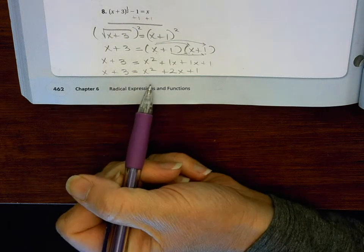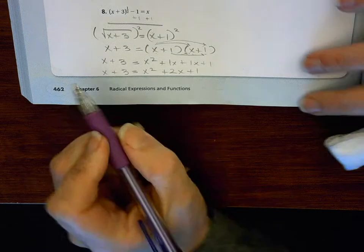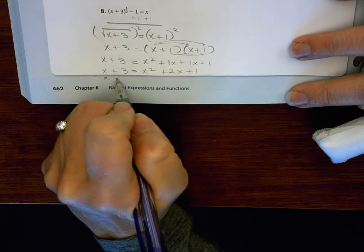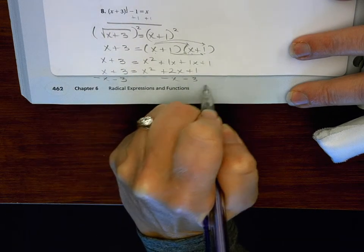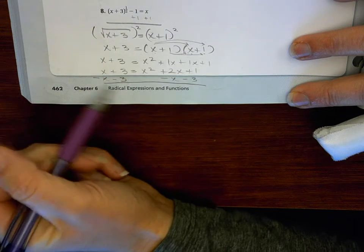And then I have a quadratic, so that means I have to solve by factoring. So that means I need to set it equal to 0. So I'm going to subtract x and 3 from both sides, and I'm going to line it up to what I can combine it with. So that will be 0.